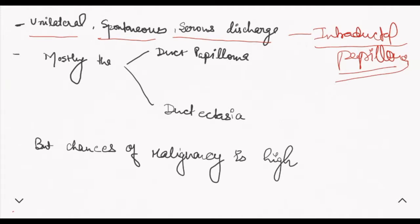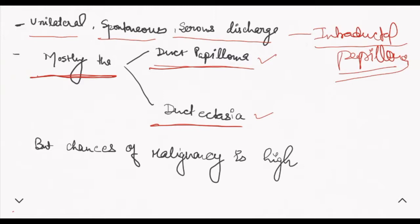Mostly, the nipple discharge is due to duct papilloma and duct ectasia — these are the most common causes of nipple discharge. What is duct ectasia? Inflammation of the lactiferous duct tubules occurs in duct ectasia. It forms a polypoid structure in which serious fluid of many colors is secreted from the nipple.